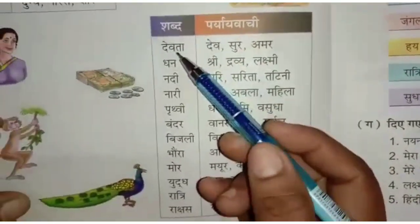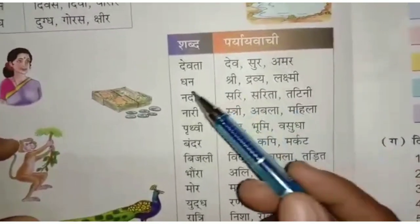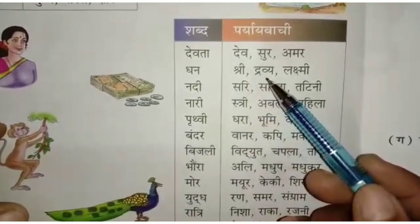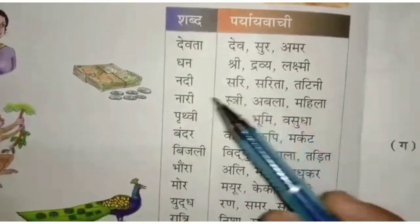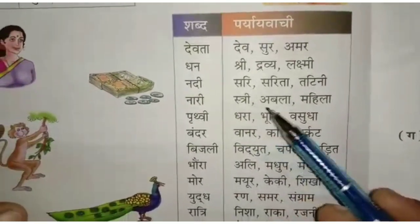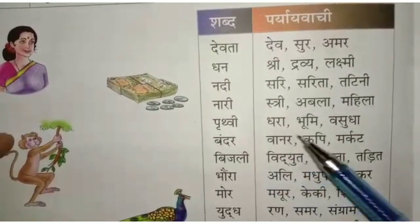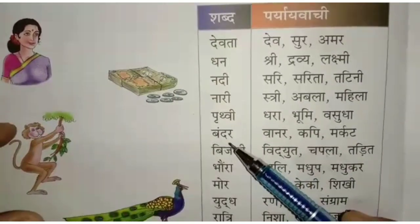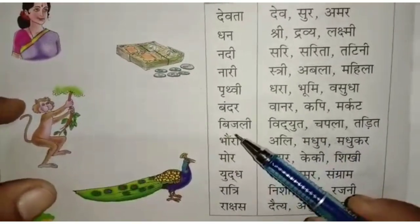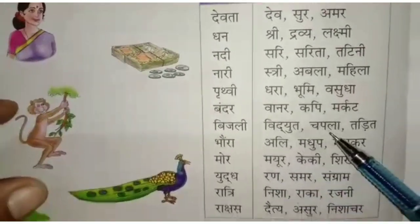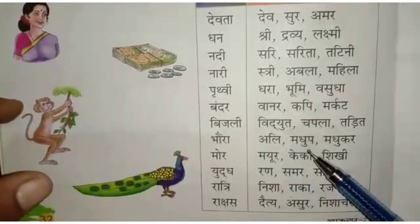पर्यायवाची शब्द: देवता — देव, सुर, अमर। धन — श्री, द्रव्य, लक्ष्मी। नदी — सरिता, तटिनी। स्त्री/अबला/महिला के पर्यायवाची। पृथ्वी के पर्यायवाची शब्द। बंदर — वानर, कपि, मर्कट। बिजली — विद्युत, चपला, तड़ित।